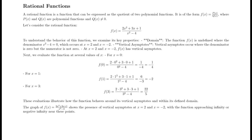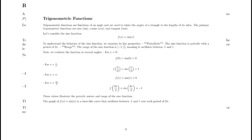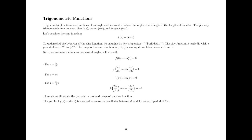These evaluations illustrate how the function behaves around its vertical asymptotes and within its defined domain. The graph of f(x) = (2x² + 3x + 1) / (x² - 4) shows vertical asymptotes at x = 2 and x = -2, with the function approaching infinity or negative infinity near these points.